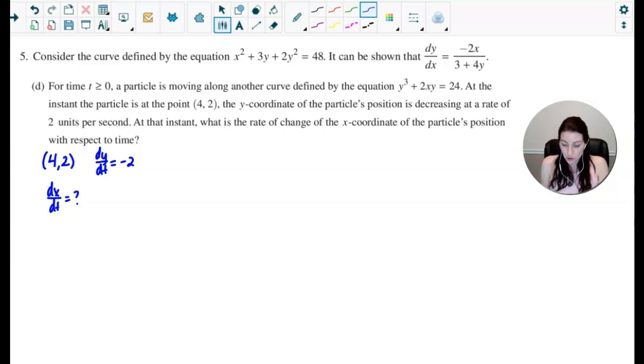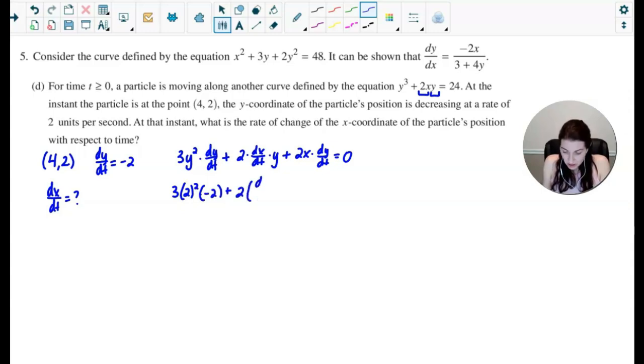The derivative of y cubed is 3y squared times dy dt. To find the derivative of 2xy, I would need to use the product rule. So I'll treat 2x as my first function and then y as my second function. So product rule would be 2 times dx dt, the derivative of the first times the second, plus the first function times the derivative of the second. And then equal to the derivative of 24 would just be 0. Let's go ahead and plug in what we know. We know that the y-coordinate is 2 at this moment. We know dy dt is negative 2. We don't know dx dt, so we'll go ahead and leave that. There's the y value of 2 again.